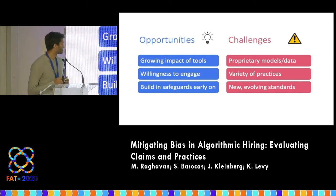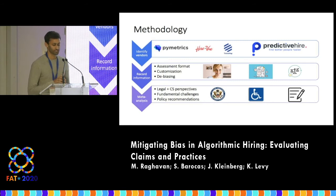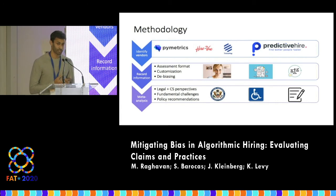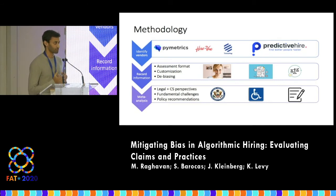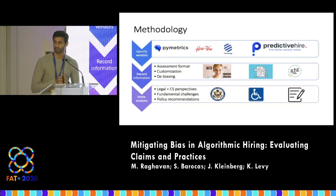There's also a large variety of practices, making it pretty difficult to paint all of these vendors with the broad brush or study them under the same umbrella. So what did we actually do in this study? The first thing was identifying a bunch of vendors in this space with particular search and inclusion criteria. From those vendors, we recorded a lot of information they publicly provide — their websites, webinars, white papers — detailing their practices, how they validate their tools, and what sort of de-biasing they do.